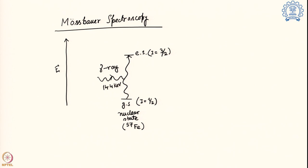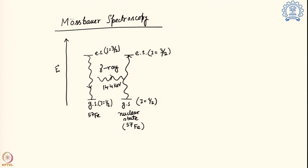How can we generate that much gamma ray energy? We generate it from a metastable state of iron-57 material, which stays at I = 3/2 and comes down to the ground state of I = 1/2. In reality, it is developed from a radioisotope of cobalt, which ultimately produces the I = 3/2 metastable state and comes down to the ground state of I = 1/2 for iron-57. This iron-57 source and the iron-57 sample are kept separated.